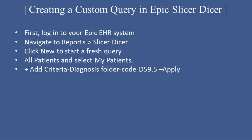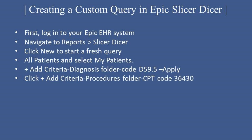Next, we'll add a second filter. Click Plus Add Criteria again, then select the Procedures folder. Enter the CPT code 36430 and click Apply.